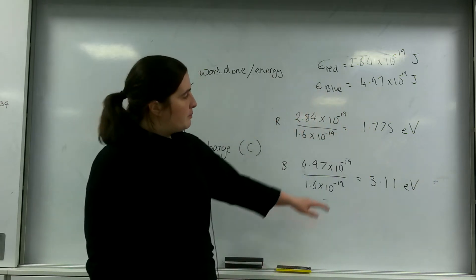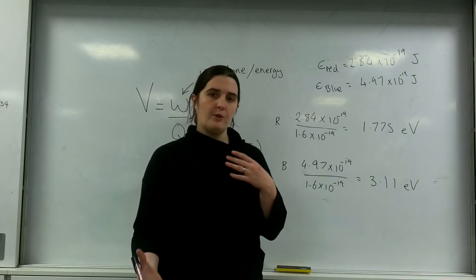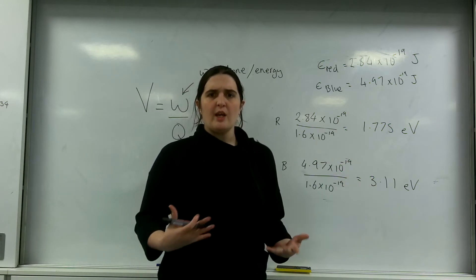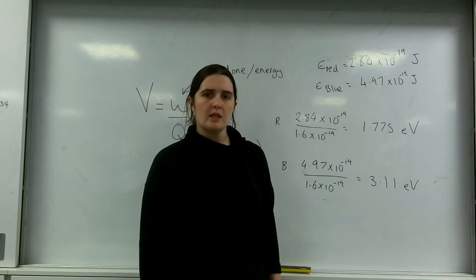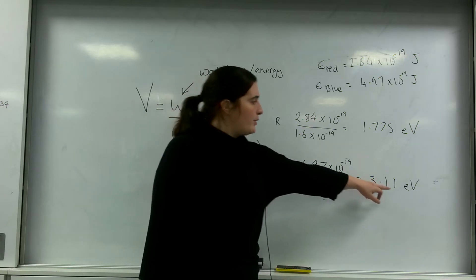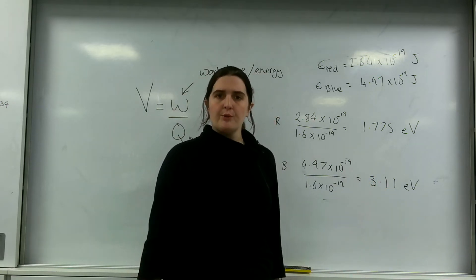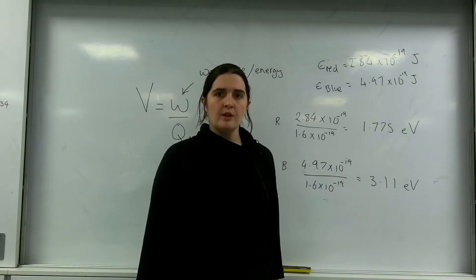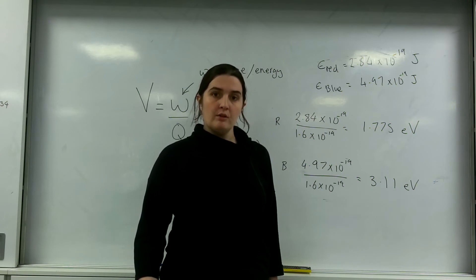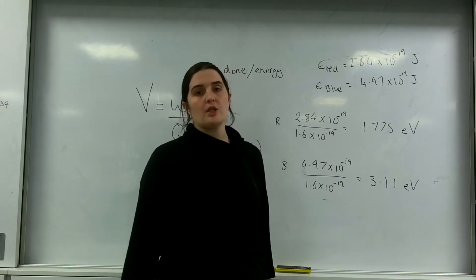This is a much easier way of writing energy — not having 10 to the minus 19. The reason you put the E is to remind you it's an electron volt: it's the amount of potential needed for an electron to carry that much energy.